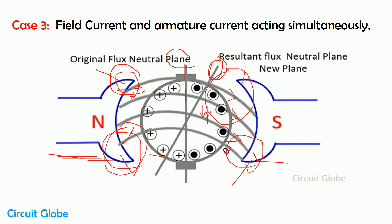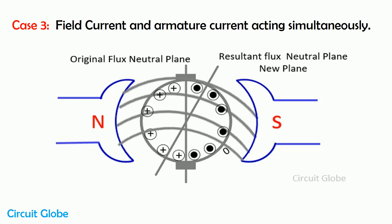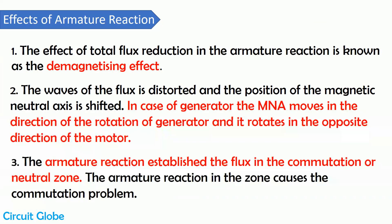Armature reaction also reduces the terminal voltage of the machine. In case of a DC generator, when armature reaction occurs, the magnitude of the generated voltage reduces. The effect through which the total flux induced in the machine may get reduced is known as the demagnetizing effect. So because of armature reaction, the demagnetizing effect occurs in the machine.